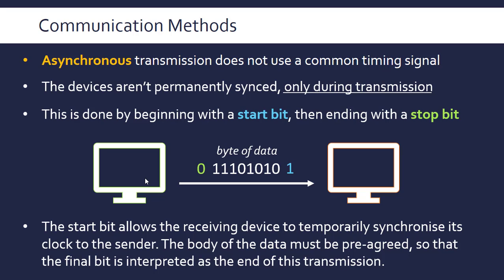But they do need to be synced up during transmission. Because the sending device is transmitting data at a set rate — one, zero, one, zero — this rate might not match the receiving device's clock. Once the start bit arrives, the receiver can time the difference between the start bit and the first actual data bit, and use that time to sync its own clock to operate at the same rate as the sender. Otherwise it might miss bits or miscount how many bits are in the message. So it's really important that they are synced up, if only during the transmission itself.